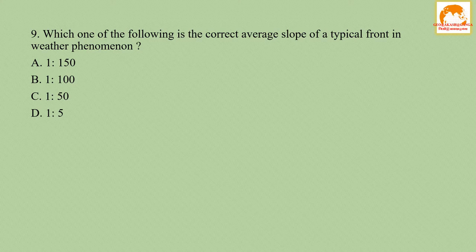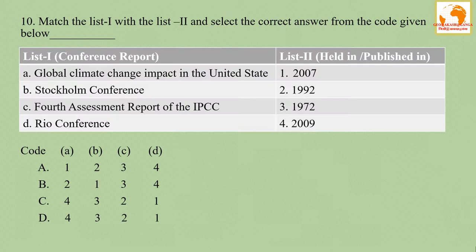Question number nine: which one of the following is the correct average slope of the typical front in a weather phenomenon? The correct answer is option B — the slope of a typical cold front is 1:100, vertical to horizontal.